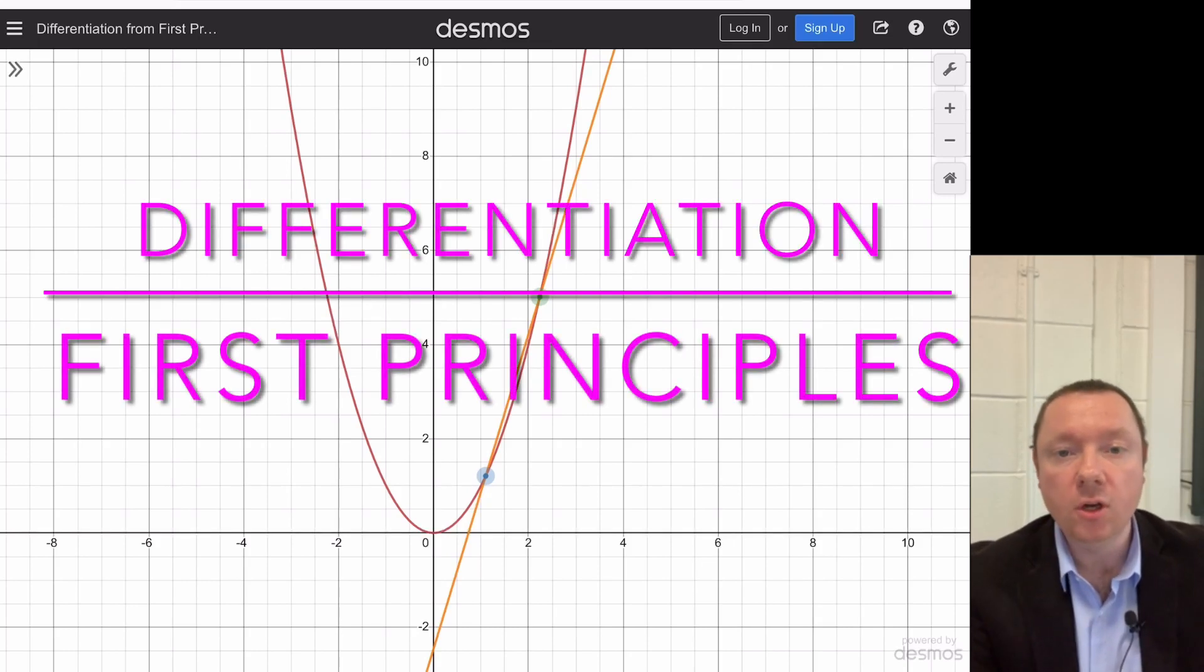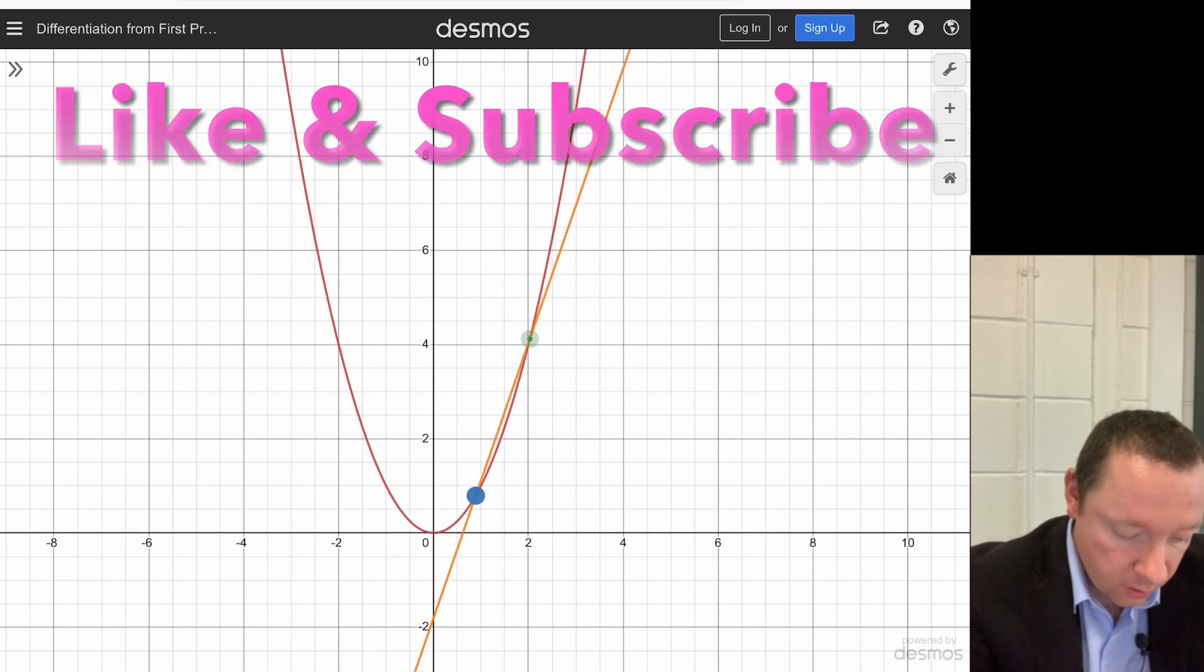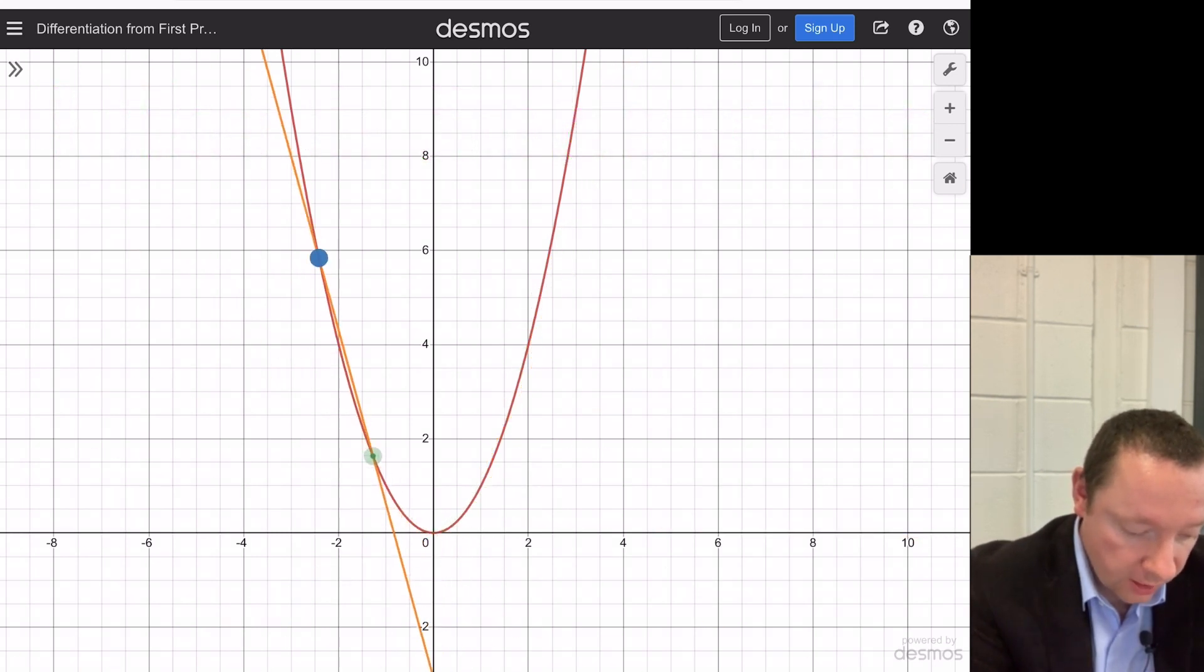This is the Coyle of Coyle of Maths. Today we're going to be looking at how to differentiate f of x equals x squared. Why is it 2x? Which you should all know from higher maths. So I've drawn the graph of y equals x squared or f of x equals x squared and we've got a couple of points here that we can just move around and it gives us a line.